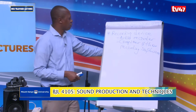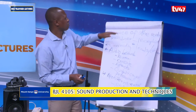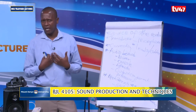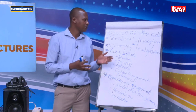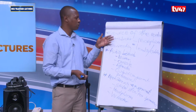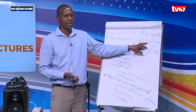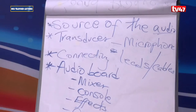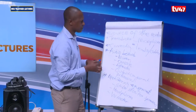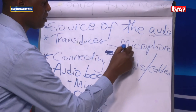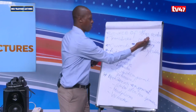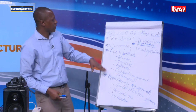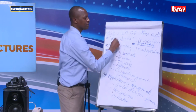We shall start with what we mentioned before — you must have the source of the audio. Today, I am the source. Then we need a transducer. A transducer is a device that converts one form of energy into another. In this scenario, the microphone is the transducer. A transducer is not just the microphone — even speakers are transducers, in that they convert electrical energy into acoustic energy. Then we have the connecting leads. So let's start with the transducer — in this case, we are looking at the microphones.